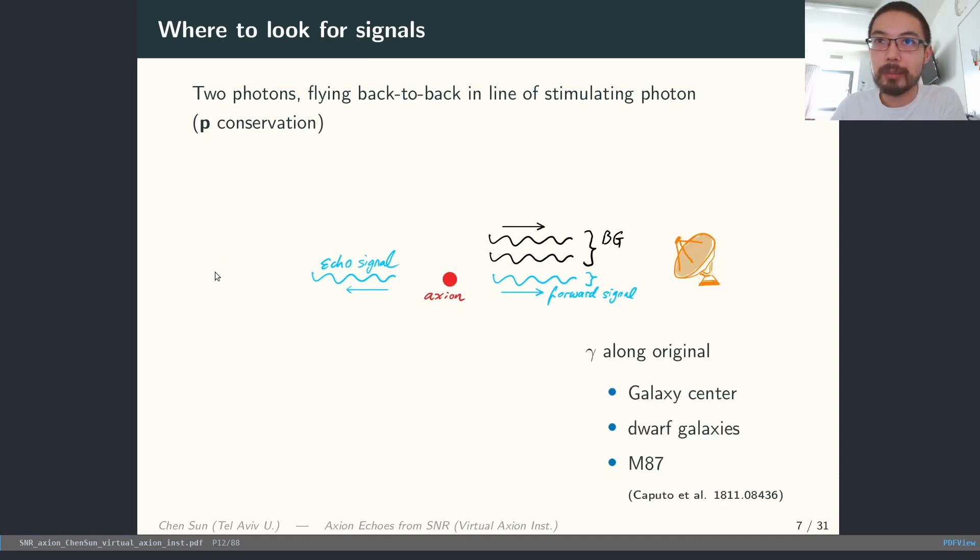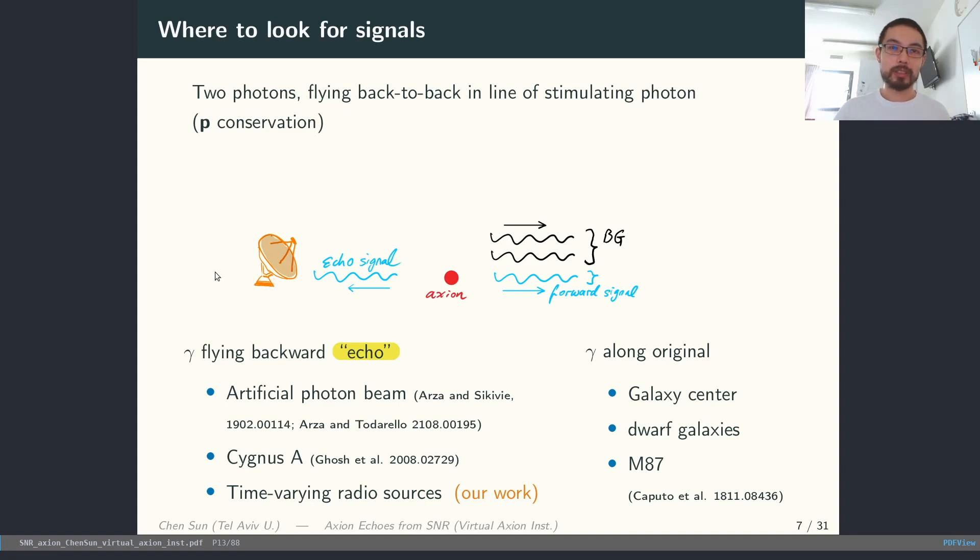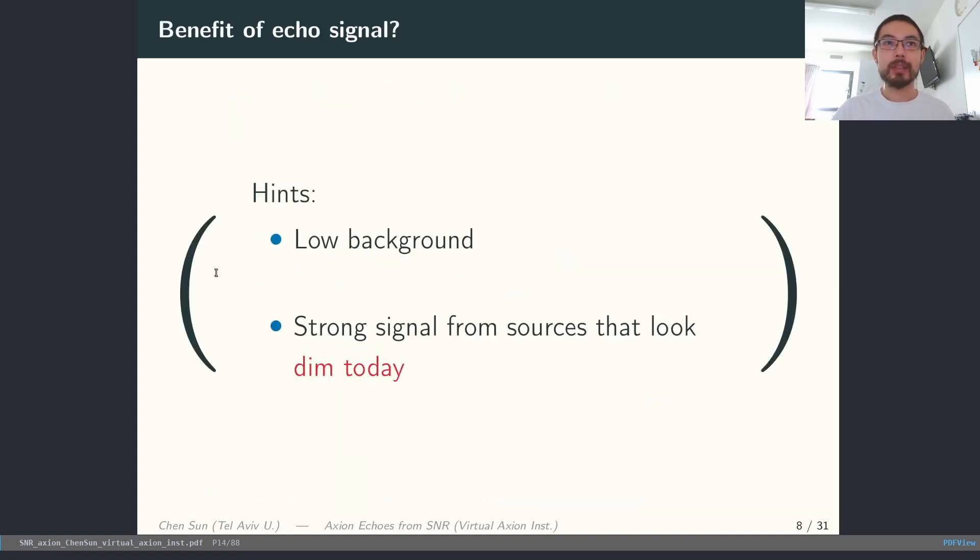In the past, there have been studies about this forward-going signal by looking into some very bright radio sources. There have also been proposals to probe this echo signal by using either some artificial photon beam or some very bright but constant radio source. So here, what's new is that we propose specific to the echo signal, the time variation of the radio source matters a lot. In other words, the echo signal depends on the history of the radio source. Let's look at what are the benefits of looking into this echo signal. One is that the echo signal potentially has a lower background. The other is that it has a strong dependence on the history so that even if the radio source is no longer very bright today, if it was very bright sometime earlier, it can still contribute to a strong signal.